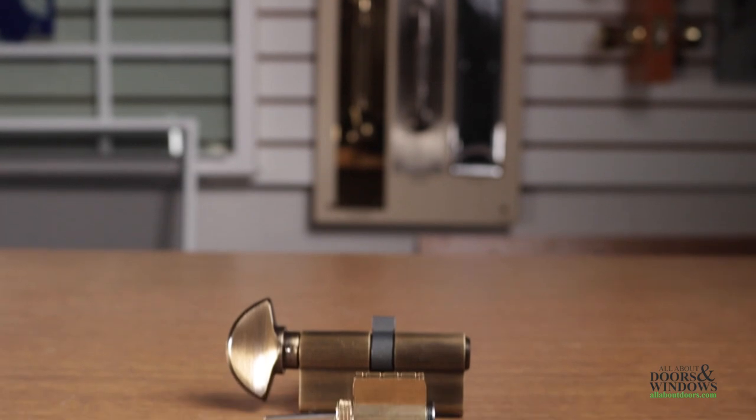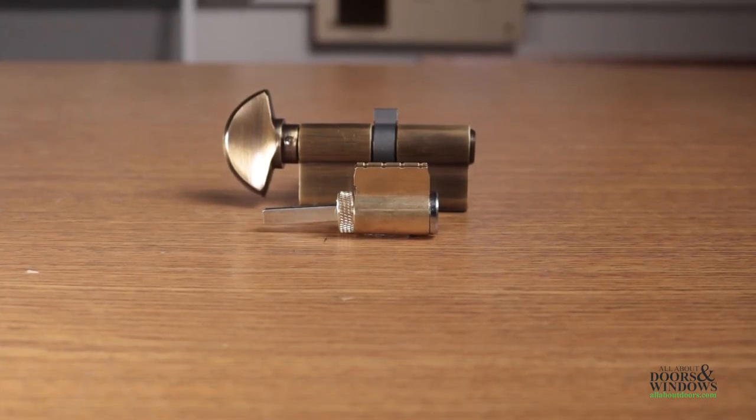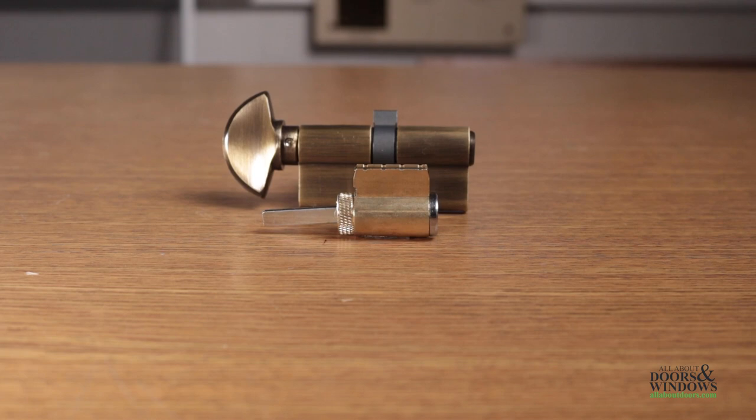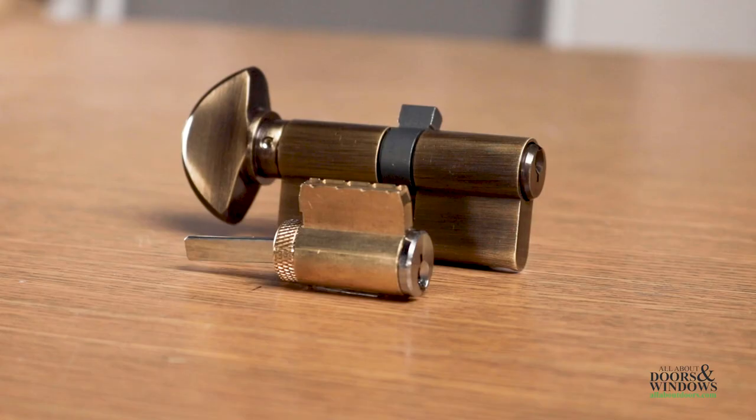Another key difference between Euro and American Cylinder Locks is the size. Euro Cylinder Locks by nature are usually larger than an American Cylinder Lock. If your lock is relatively small and slender, it is likely an American Cylinder Lock. If it is larger and more substantial, it is likely a Euro Cylinder Lock.